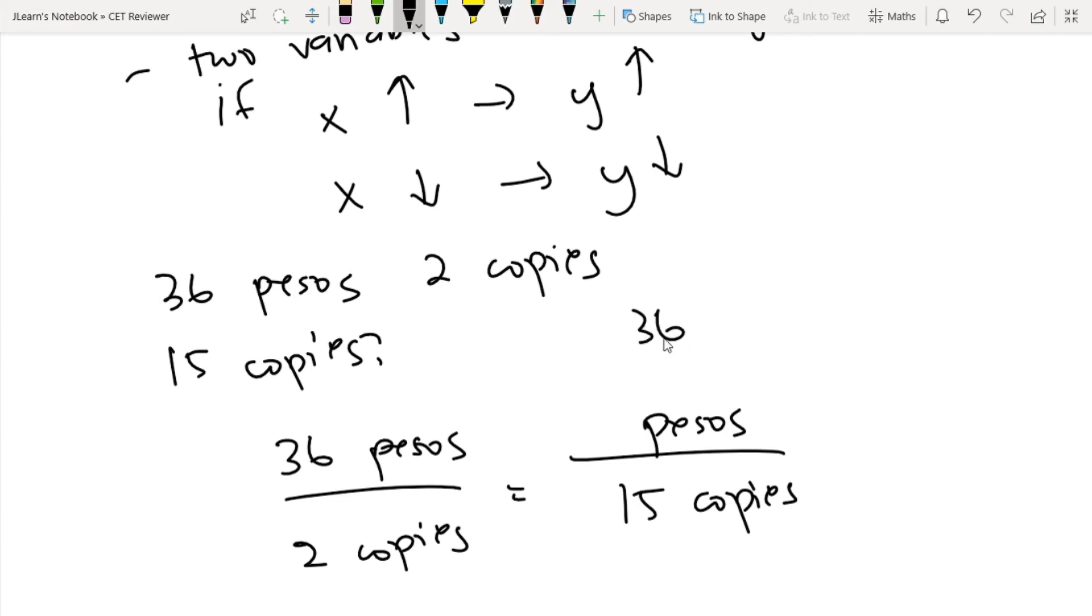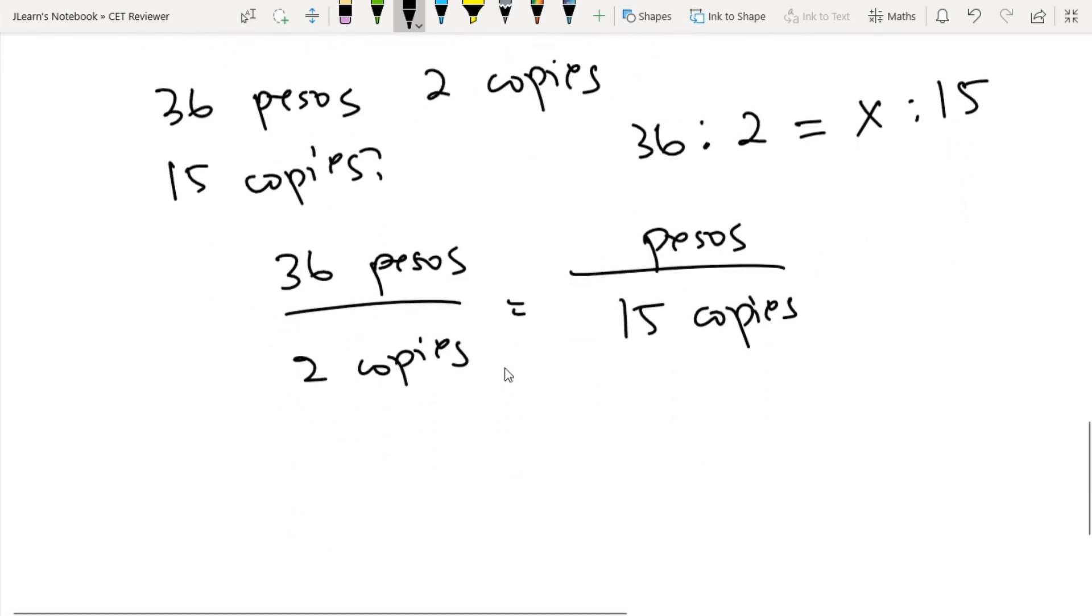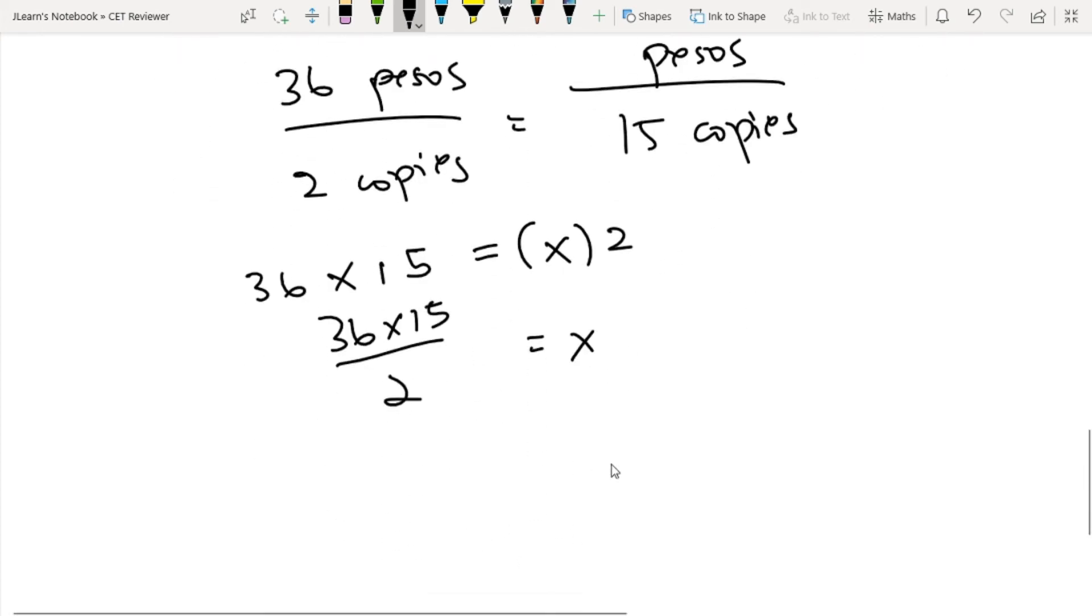Or you can write them as 36 pesos is to two copies equals x is to 15. How do we solve this? Again, product of extremes equals product of means. So 36 times 15 should equal x times 2. We can solve for x here. x equals 36 times 15 all over 2, which will be equal to 270 pesos.